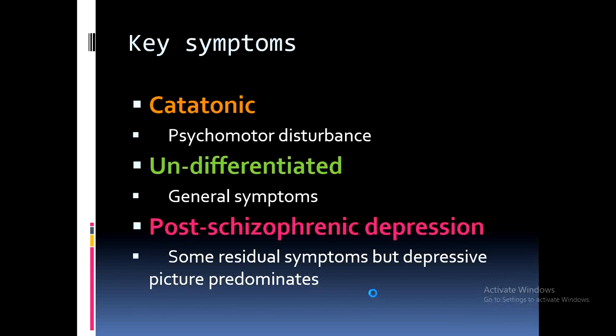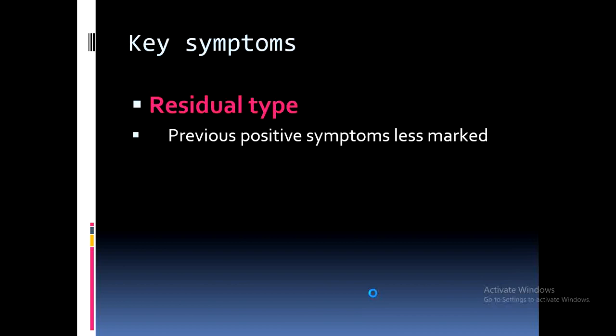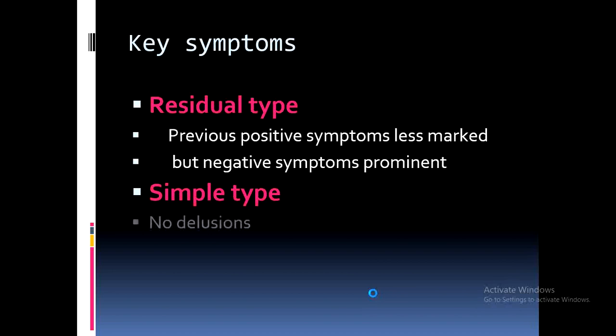Post-schizophrenic depression shows residual symptoms with a predominantly depressive picture. This occurs when, after treating schizophrenia, residual symptoms remain that are mostly depressive in nature — the person comes to realize they have been suffering from a psychotic illness and becomes profoundly depressed. Residual type features previous positive symptoms that are less marked, while negative symptoms are more prominent.